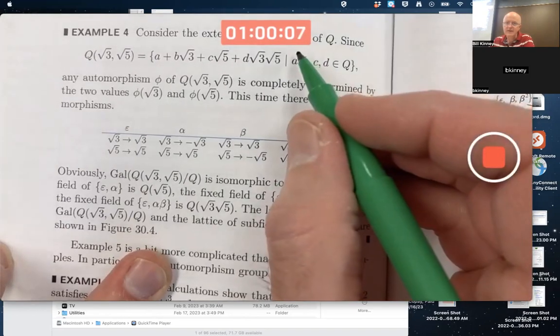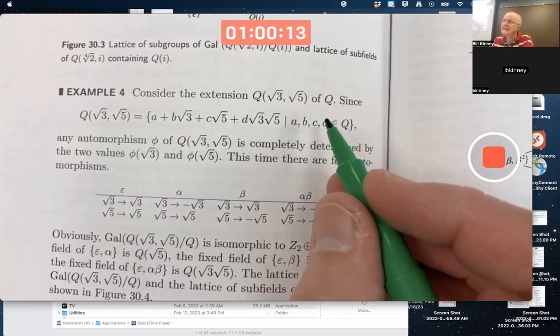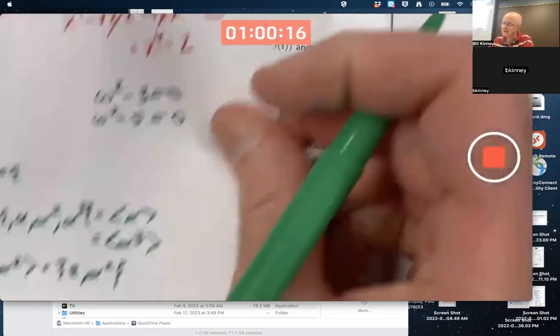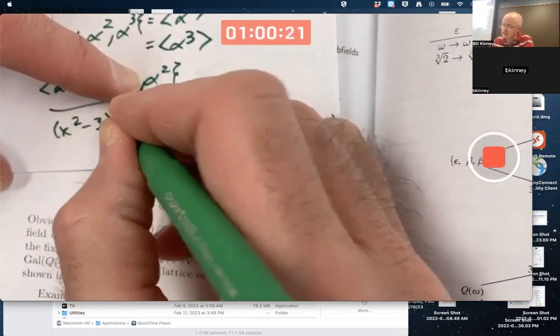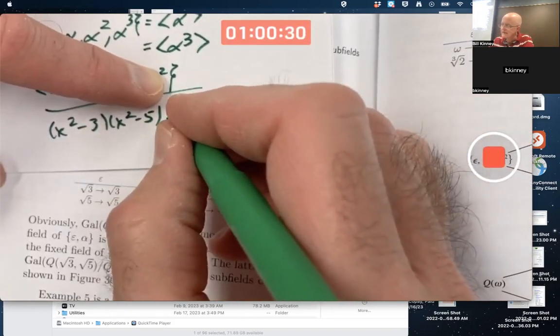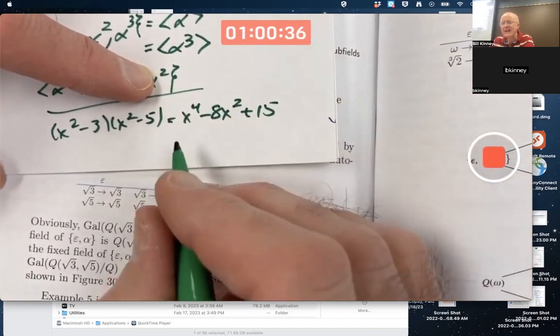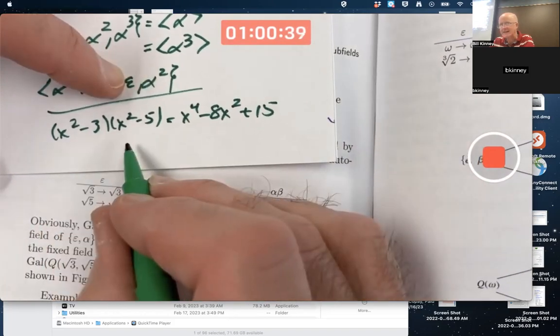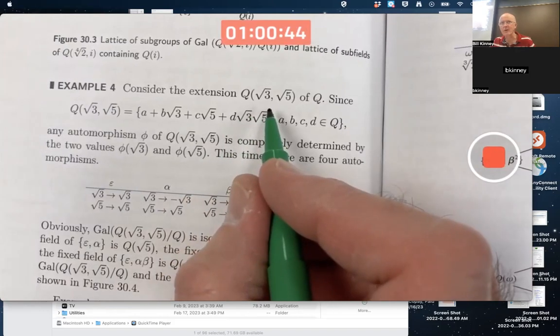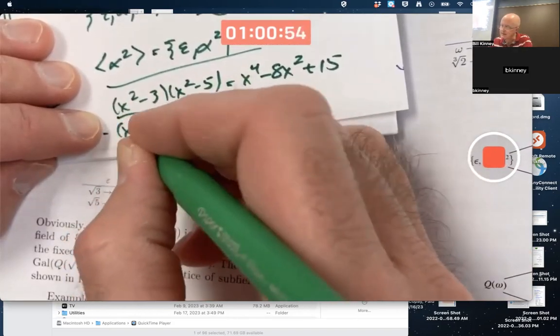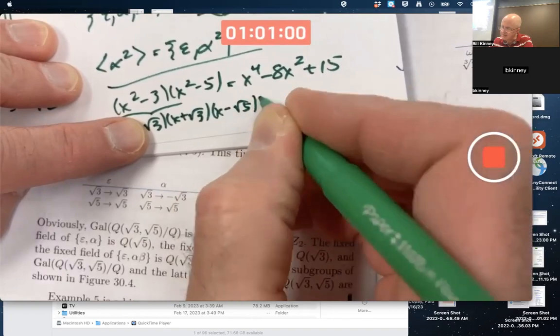It is the splitting field, it turns out, for a certain polynomial over Q. So what polynomial would that be? It'd be x squared minus 3 times x squared minus 5, x to the fourth minus 8x squared plus 15. This is not irreducible over the rationals because you can factor it like that. But this is a splitting field for it over the rationals. This equals x minus root 3 times x plus root 3 times x minus root 5 times x plus root 5.